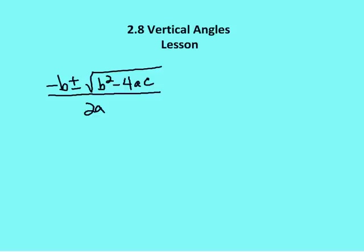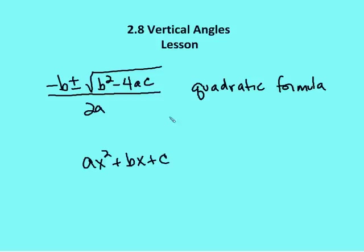One last thing I want to talk about is part of the process of understanding geometry: we use algebra. As part of algebra, we need to know the quadratic formula, because in some cases we'll need to use it to figure out the value of some angle measures or segment measures we're required to determine. The quadratic formula is: x equals negative b plus or minus the square root of b squared minus 4ac, all over 2a, where a is the coefficient in front of x squared, b is the coefficient in front of x, and c is the constant.